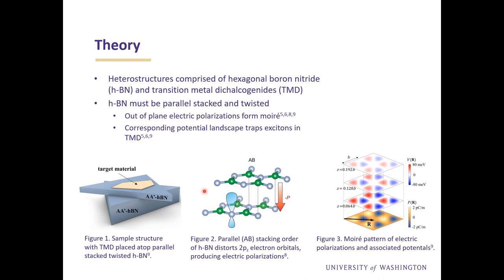the most energetically favorable stacking order distorts the nitrogen's two pz orbital electrons, creating electric polarizations at the HBN interface.